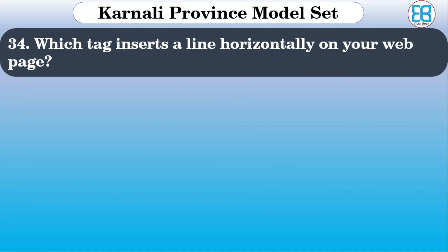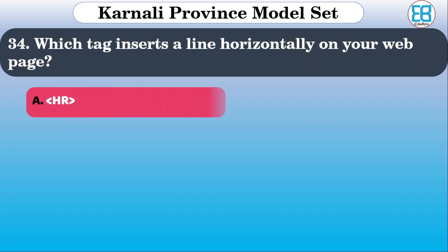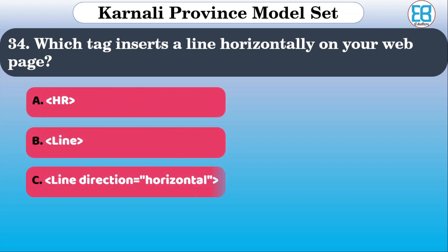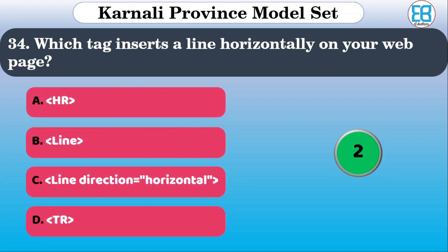Which HTML tag is used to draw a horizontal line? The options include various tags. The correct option is the horizontal rule tag — HR.